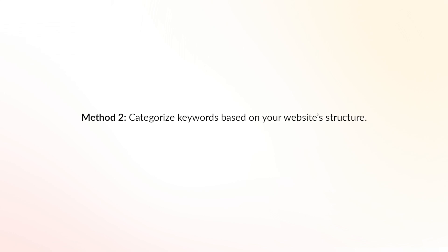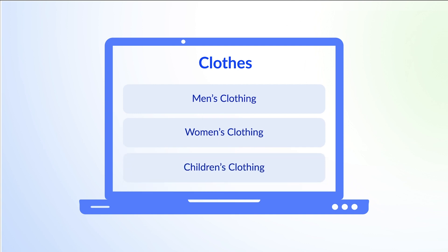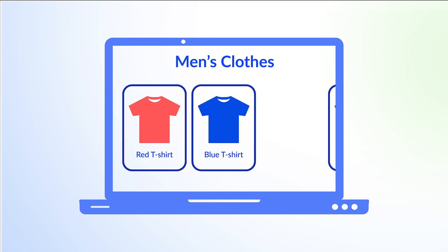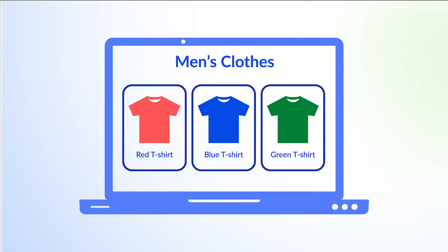Method 2 is to categorize keywords based on your website structure. For example, if you're selling clothes online, your navigation may go men's clothing, women's clothing, children's clothing, with relevant subcategories under each. You would group keywords based on those site categories — so 'red men's t-shirts' and 'blue men's t-shirts' would be in the same group under the men's t-shirts category. A smart thing to do is combine both methods to ensure your website structure matches the searcher's intent — for instance, a landing page for an informational query that leads the user to a sales offer where they can make a buying decision.